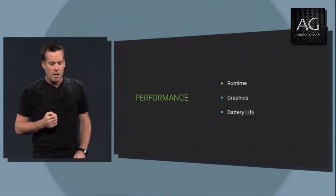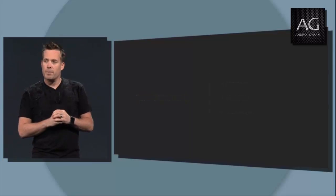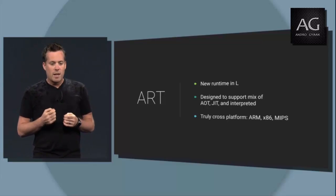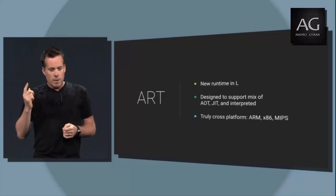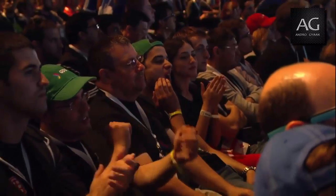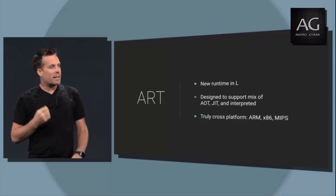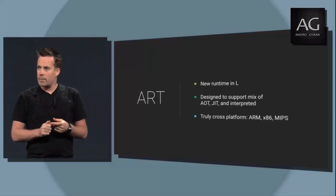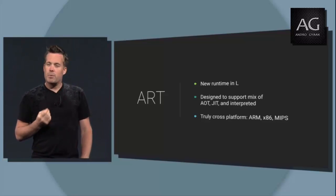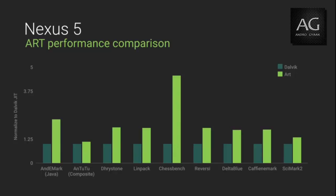Let's start with the Android virtual machine. You might remember that we made a very early version of our new runtime, ART, available as a developer option in KitKat. But we got some really great feedback from you guys, as well as excellent open source contributions from ARM, Intel, and MIPS. And I'm excited to say that the L release runs exclusively on the new ART runtime. We wrote ART from the ground up to support a mix of ahead-of-time compile, just-in-time compile, and interpreted code, and it's truly cross-platform, supporting ARM, x86, and MIPS. We put a lot of effort into optimizing ART's back-end compilers, and this has resulted in a 2x improvement in performance over Dalvik. And best of all, this one is on us — you don't have to make a single change. All of your app code just gets the performance improvement for free.